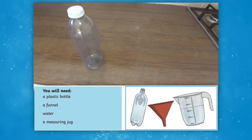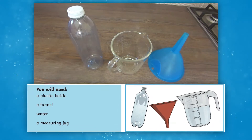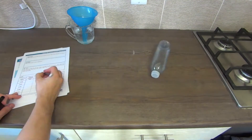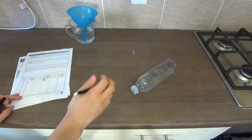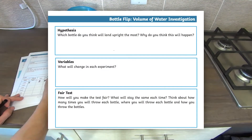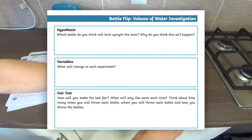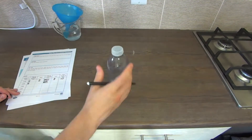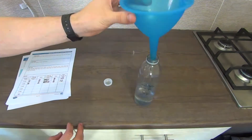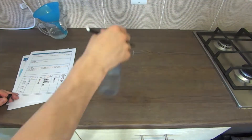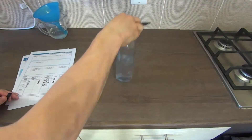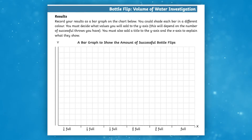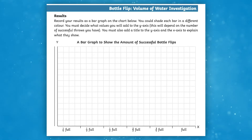With a bottle, funnel, jug and some water, children will add different amounts of water to a bottle before flipping them to discover the results. Before we start, we need to fill in the hypothesis and fair test section on the provided sheets. Once completed, children can work in pairs to flip the bottle with different amounts of liquid, recording their results on the provided table. Children plot this information in a graph before concluding their experiment and looking back at their hypothesis.